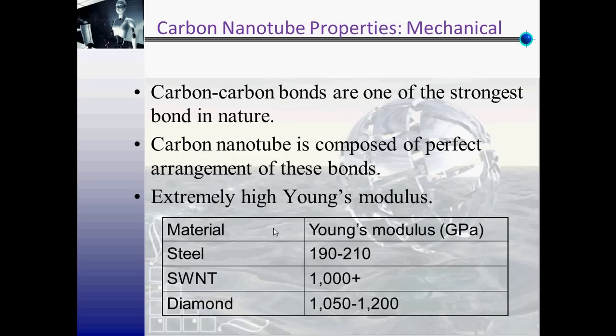Chemical properties. Because of their carbon bonds, carbon nanotubes are one of the strongest and stiffest materials ever found. This table shows the extremely high performance of carbon nanotubes as a material.